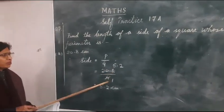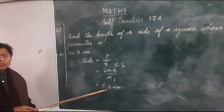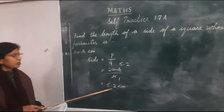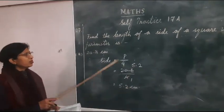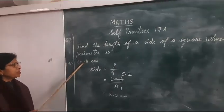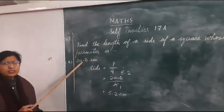20.8 upon 4 equals 5.2 centimetre. So this will be the side of the square whose perimeter is 20.8 centimetre.